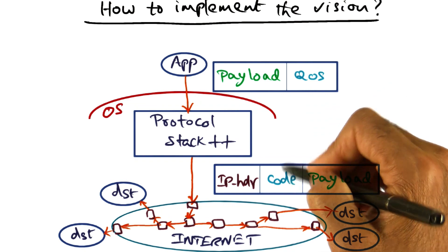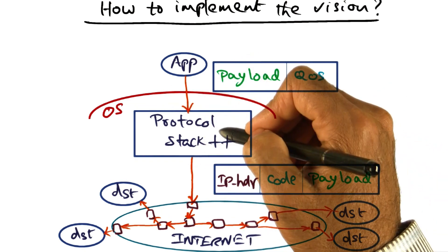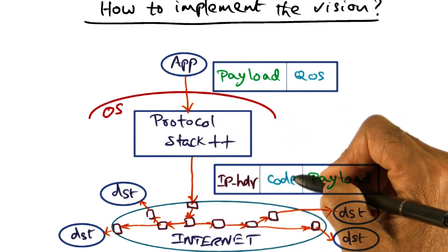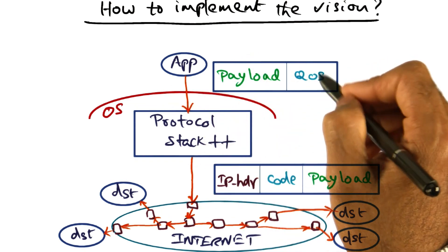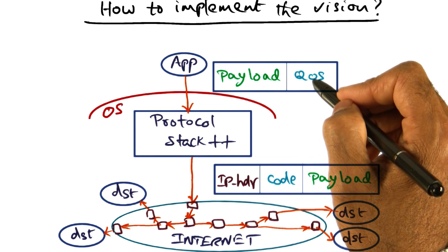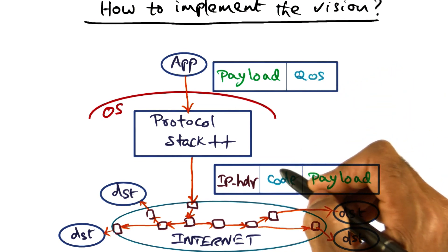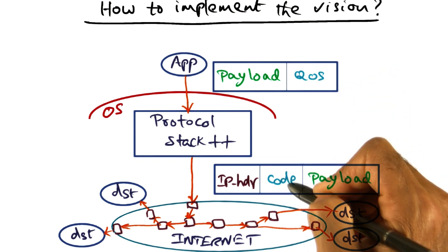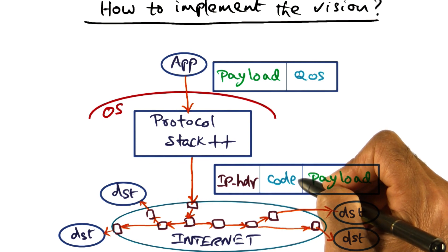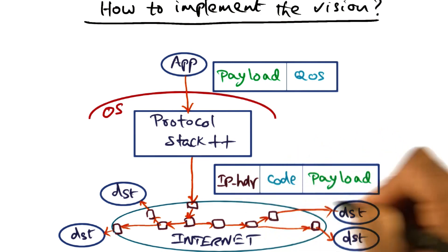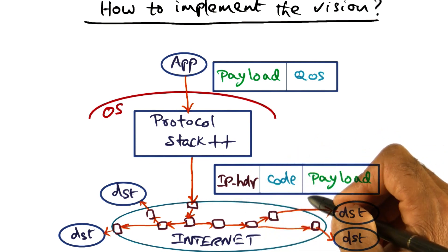The code that the operating system is going to synthesize is essentially taking the quality of service constraints and putting them as executable code that can then be passed around as part of the packet.